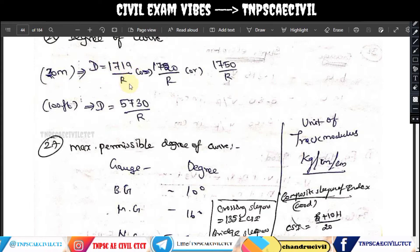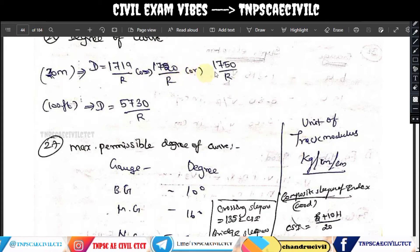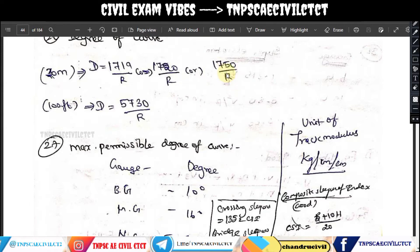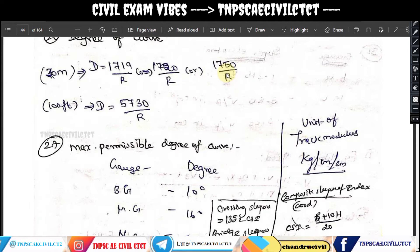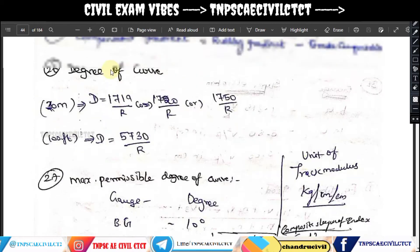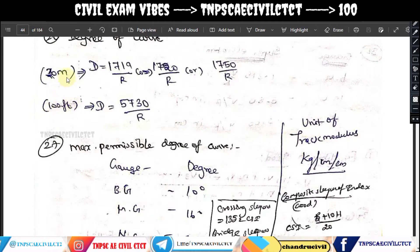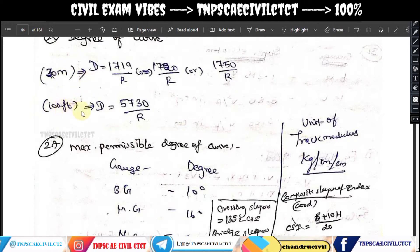So D equals 1719 divided by R, where R is the radius. For the degree of curve in feet, you multiply: since 1 meter equals 3.3 feet and 100 feet is used, D equals 5730 divided by R. You need to learn both: 1719/R for metric and 5730/R for feet.